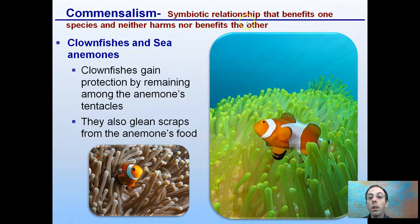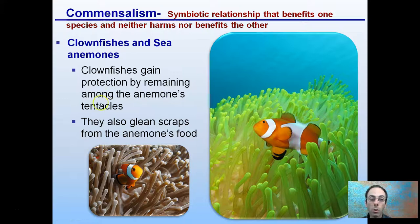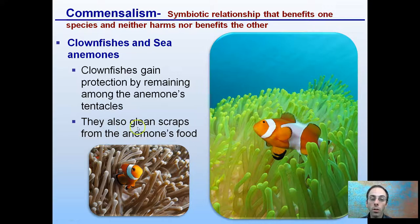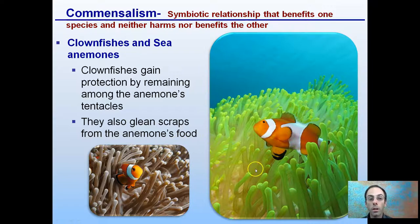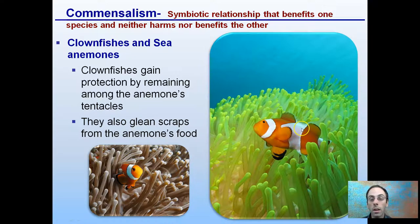Commensalism is a symbiotic relationship that benefits one species but neither harms nor benefits the other. Clownfish and sea anemones are the prime example. Clownfish gain protection by remaining among the anemone's stinging tentacles and also glean scraps from the anemone's food. But the anemone is really not getting much benefit — the clownfish is benefiting, but it's not feeding on the anemone or reducing its ability to survive.